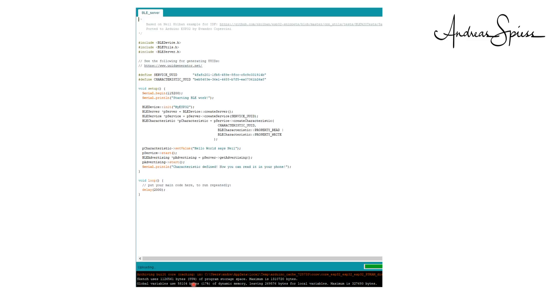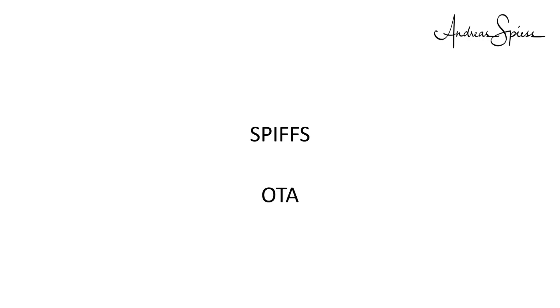Where is the 3 MB memory we paid for? Do you remember the words SPIFFS and OTA from the ESP8266? SPIFFS is a simple file system which was already available on the ESP8266 — you find a link to the video in the upper right corner. OTA means update over the air. Both are very handy if you need them, but they need memory space. With the ESP32, there is a simple way to find out how much they use and also to change their size.